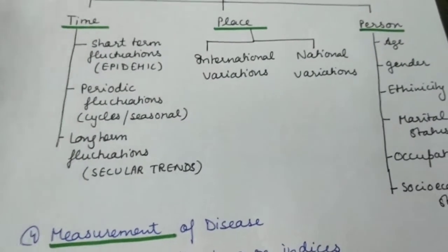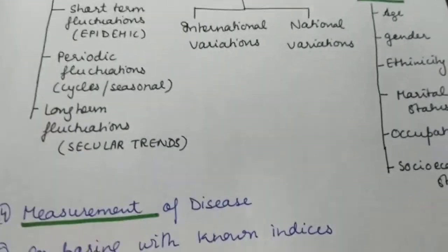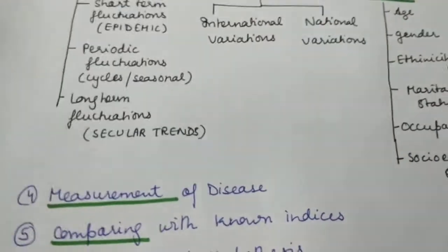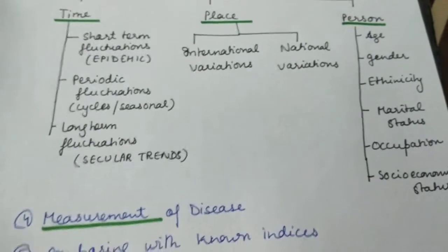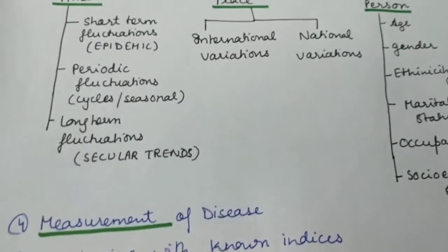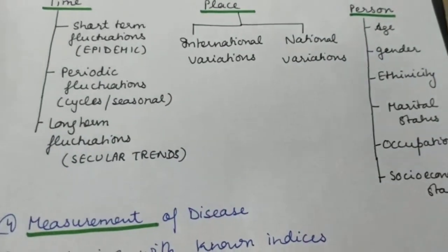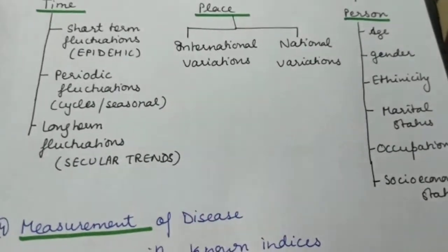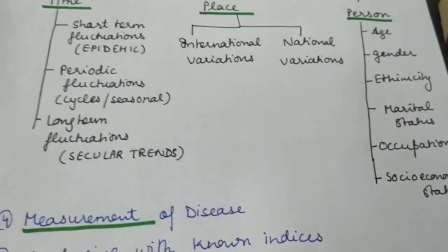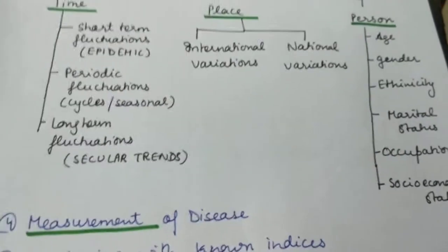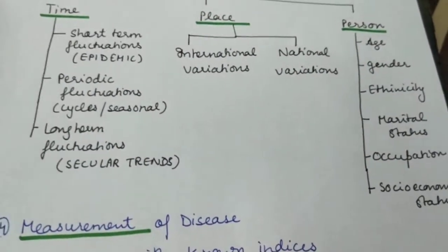Certain diseases also have cyclical trends — the disease comes in cycles. Measles comes every two to three years, influenza every seven to ten years, and rubella every six to seven years. Then there are long-term fluctuations or secular trends, which refer to a definite movement in one direction. Cardiovascular diseases and hypertension show an increasing secular trend, whereas TB, diphtheria, plague, and polio have a decreasing trend over the decades.